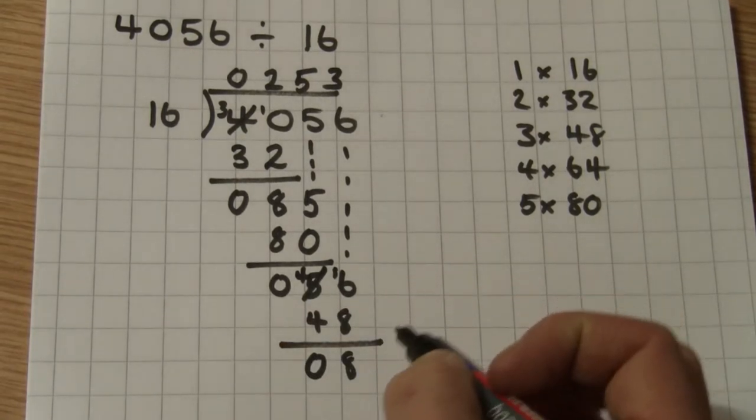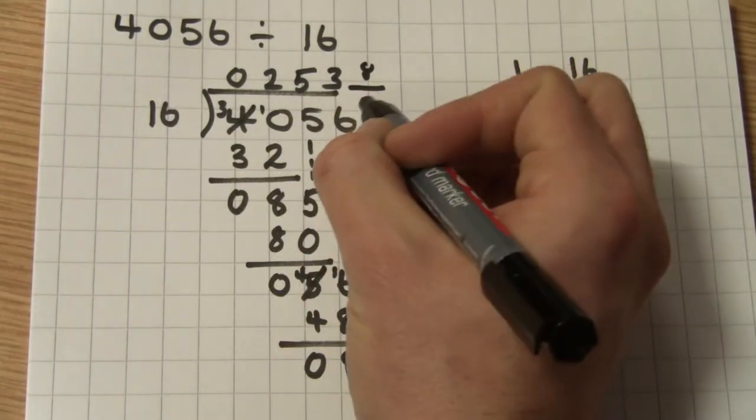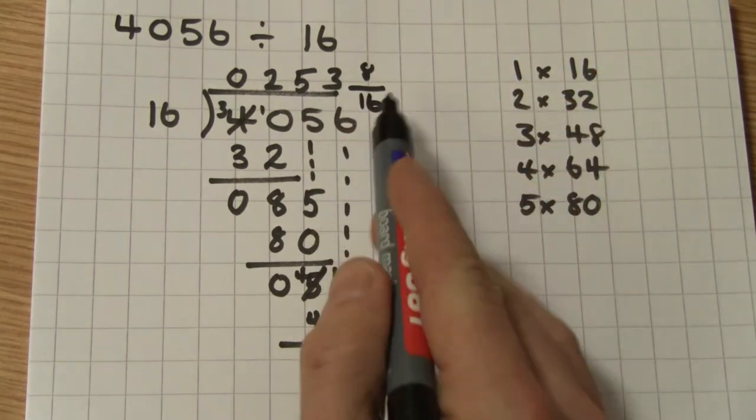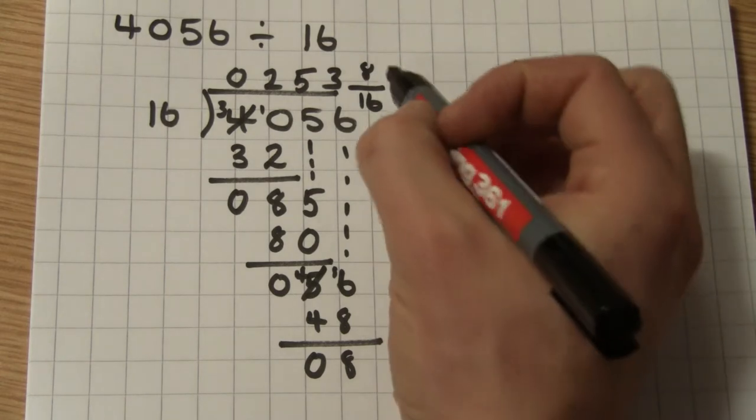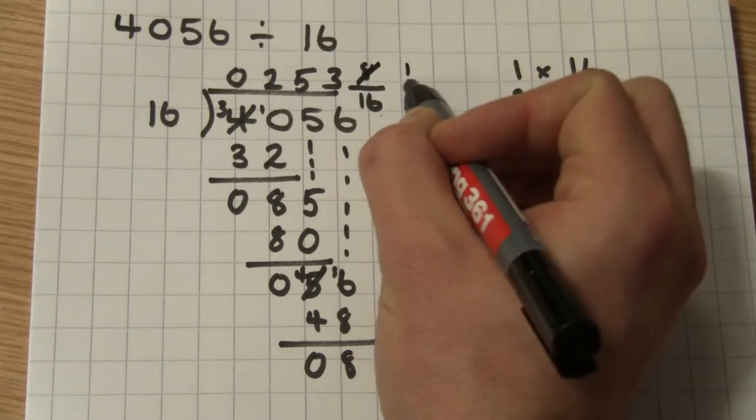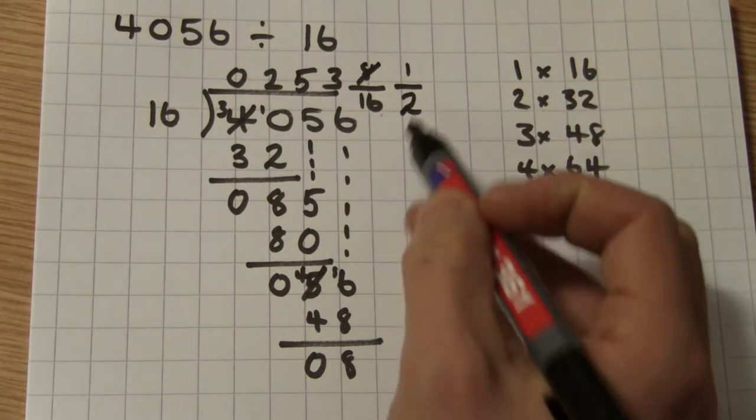To write this remainder, I write it as a fraction. So I write it as 8 over the divisor, which is 16. Now, 8/16 will simplify because 8 goes into both the numerator and the denominator. Eight goes into 8 once, and 8 goes into 16 twice, giving us a half.